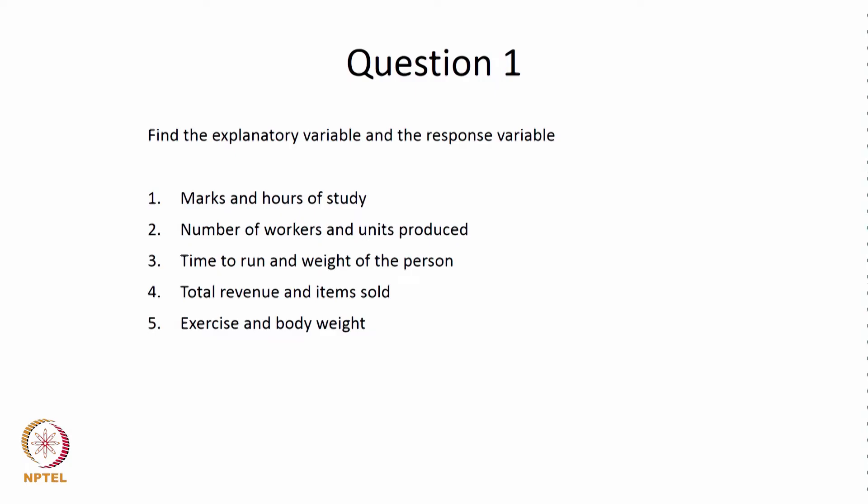Total revenue and items sold: the assumption is that revenue comes because of sale of items, so items sold is the explanatory variable while total revenue is the response variable. Fifth: time spent on exercise and body weight. The general assumption is that as we spend more time exercising the body weight reduces. Therefore, time spent on exercise is the explanatory variable and body weight is the response variable.